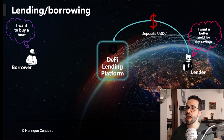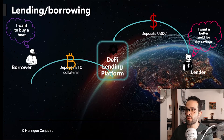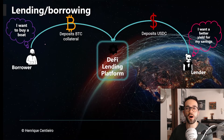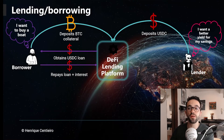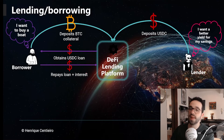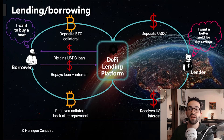What's going to happen is that Alice, the lender or liquidity provider, is going to deposit USDC — a stablecoin. Then the borrower, Bob, is going to deposit Bitcoin as collateral because he wants to get a loan but doesn't want to sell his Bitcoin. After that, he can obtain a USDC loan, and then at some point he will repay the loan plus interest. Alice, whenever she wants, can also withdraw her USDC. Once Bob repaid the loan, he can receive the collateral back. This is basically how a DeFi lending protocol works.